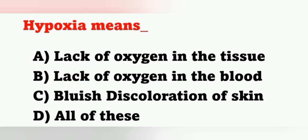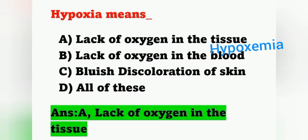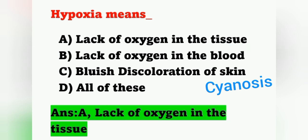Next question: hypoxia means — options: A) lack of oxygen in the tissue, B) lack of oxygen in the blood, C) blue discoloration of the skin, D) all of these. Hypoxia means decreased oxygen in the tissue — option A. Hypoxemia means lack of oxygen in the blood, and blue discoloration of the skin is known as cyanosis.